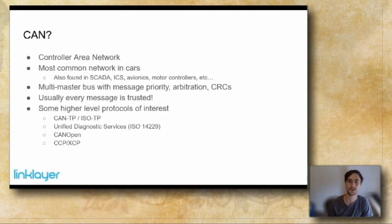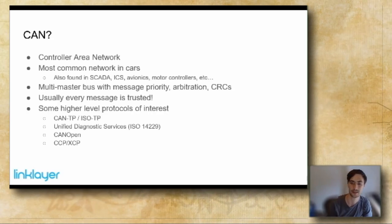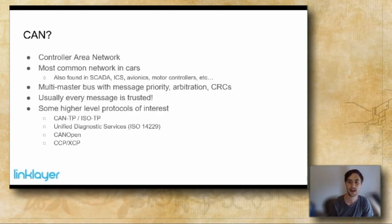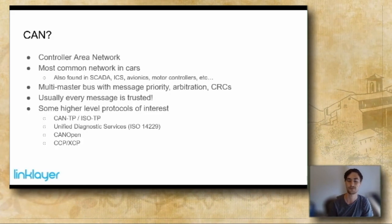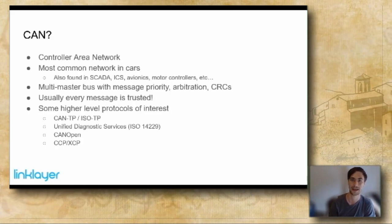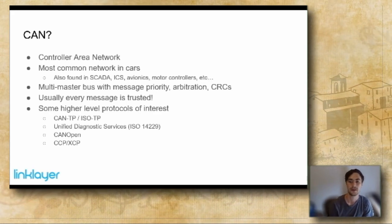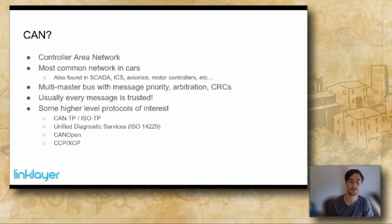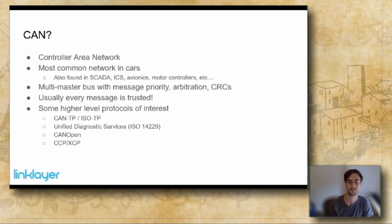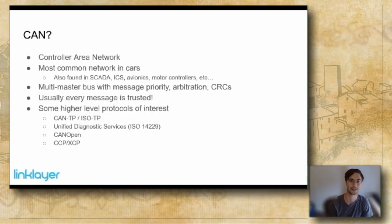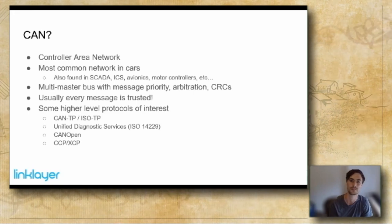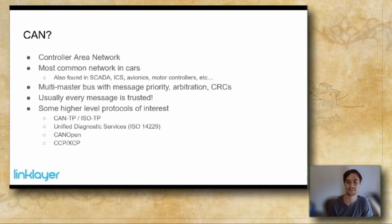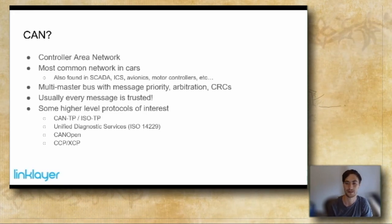CAN is also found in SCADA systems and industrial control systems. There's actually a certain amount of use in avionics systems for sending messages between avionics components, and a lot of motor control is done over CAN — from small to very large motor controllers. Those are the most common places you'll see it, though a few more do come up.